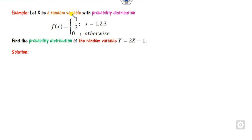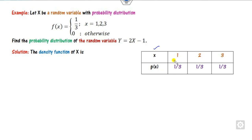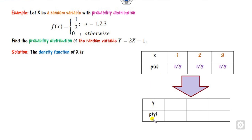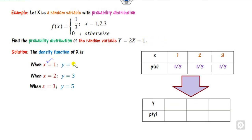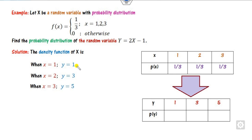Let's discuss the first case when the function is 1-to-1 and how you can find the PDF of y. Consider one example: if x is a random variable having a given probability density function, you have to find the probability distribution of y = 2x - 1. Since x consists of only three values — a discrete form — you first write the probability density function of x. That is, x = 1, 2, and 3 with corresponding density values. Once you have x from 1 to 3, substitute into y = 2x - 1: when x = 1, y = 1; when x = 2, y = 3; and so on, giving values 1, 3, and 5. You can see all values of y are unique — there is no repetition.